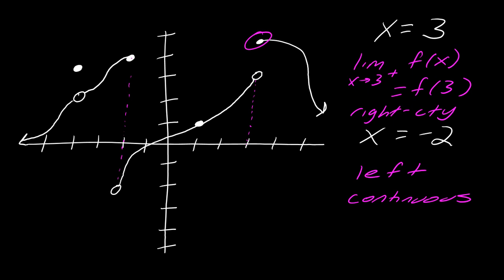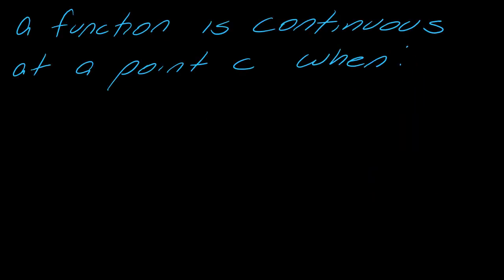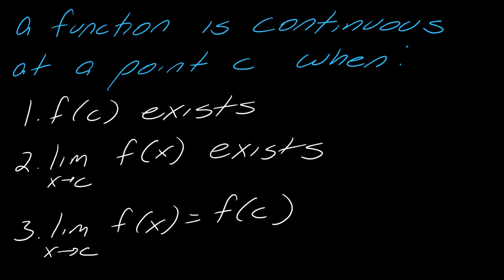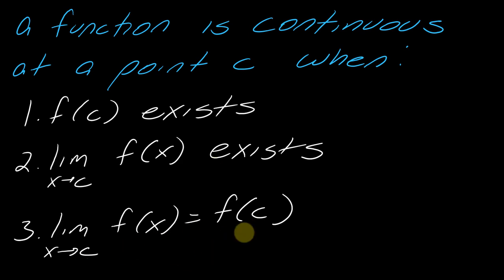Just to review: a function is continuous at a point C when you have these three conditions all happening at the same time. You have that f of C exists, and the limit as x approaches C of f of x exists, and these two things are equal to one another. This is the key thing that you're looking for when you're talking about continuity.